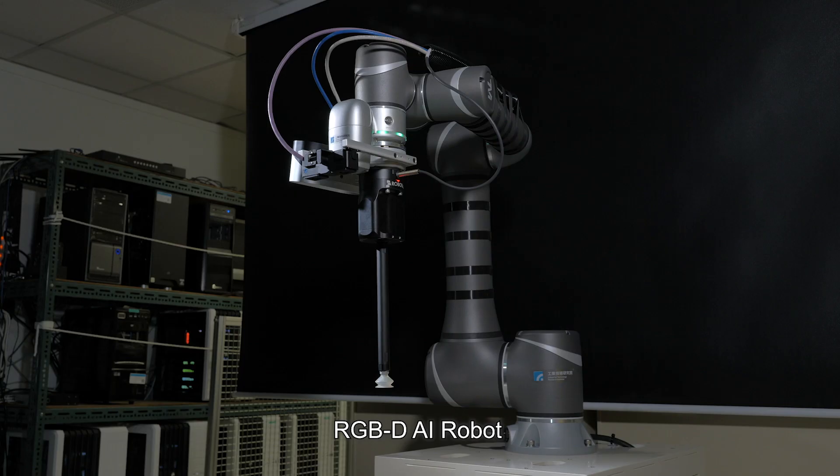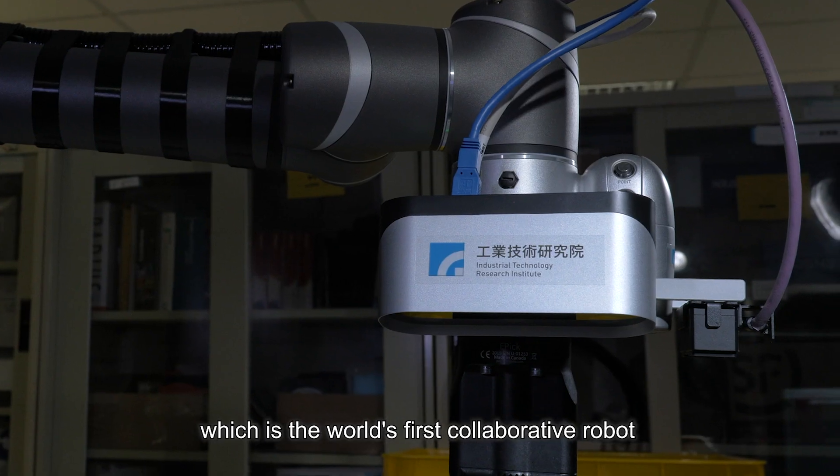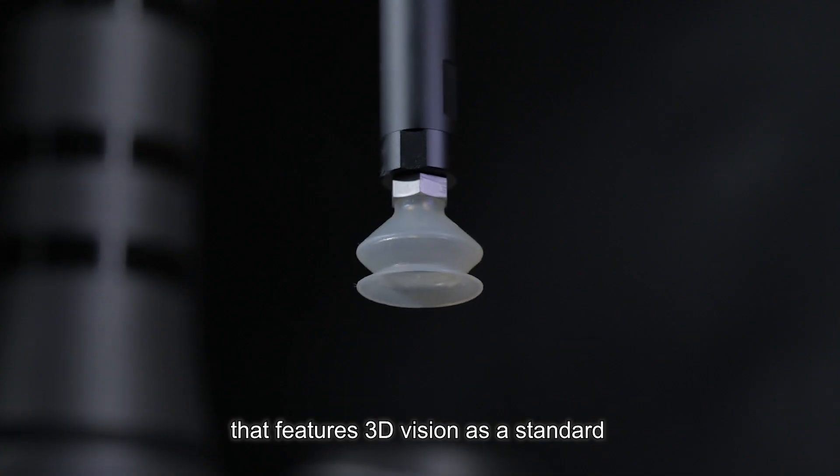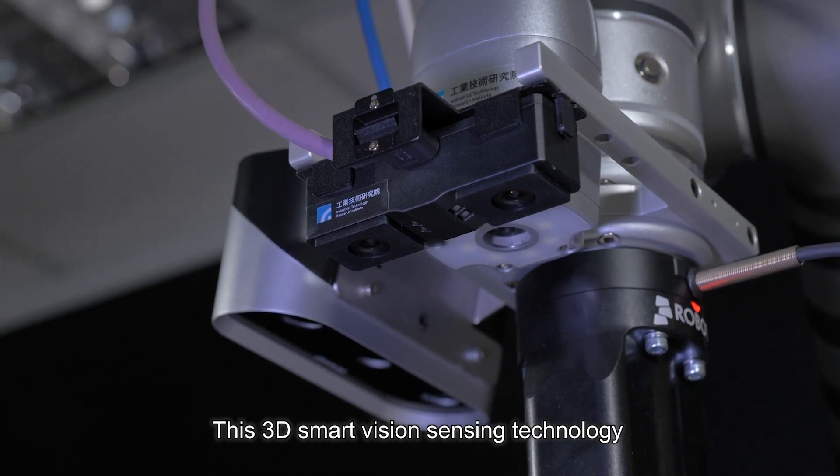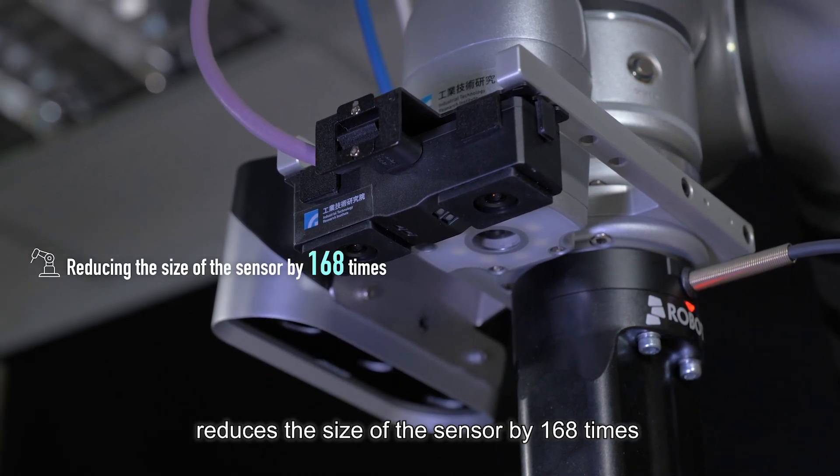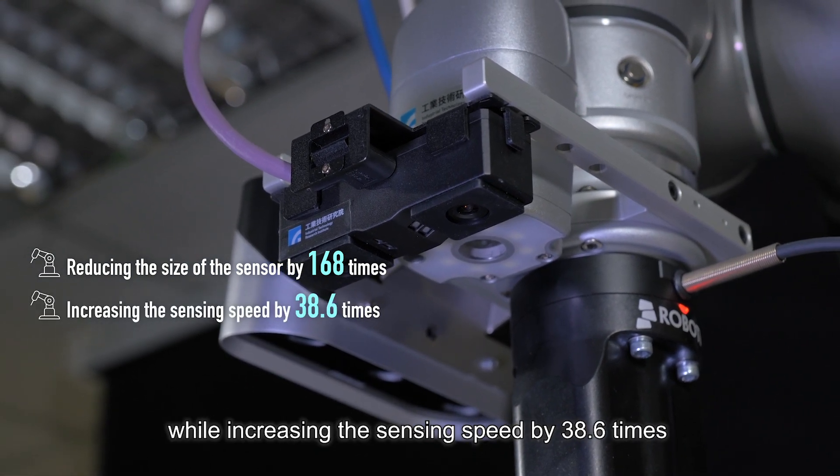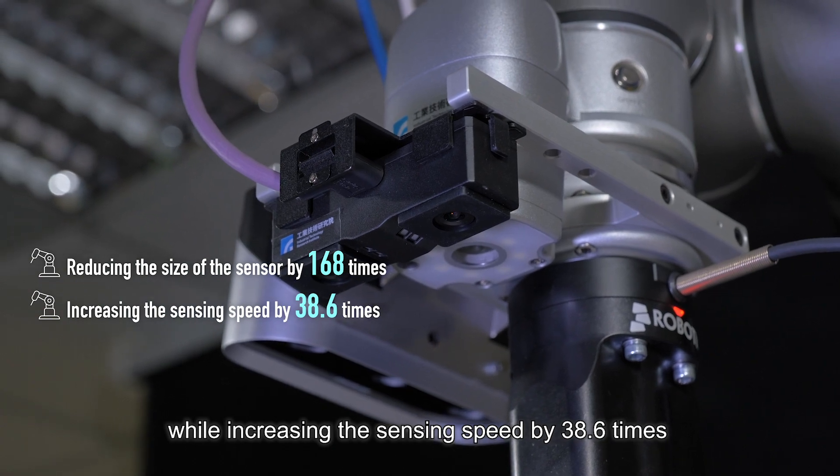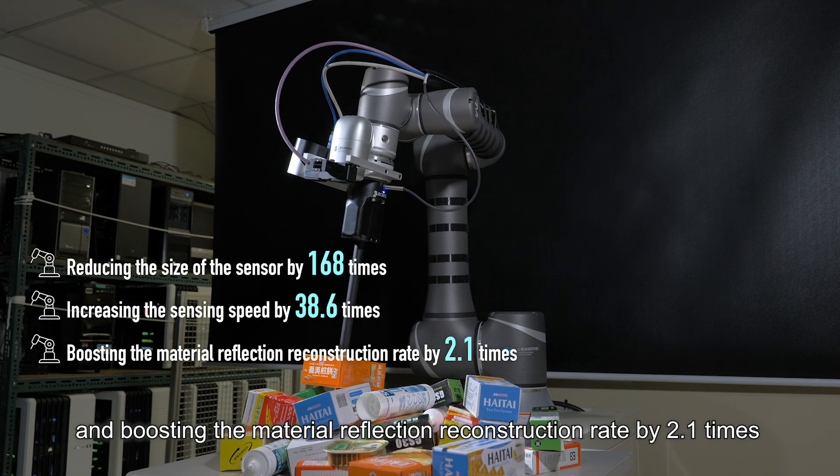Eitri has developed an innovative RGBDAI robot, which is the world's first collaborative robot that features 3D vision as a standard. This 3D smart vision sensing technology reduces the size of the sensor by 168 times compared with other brands, while increasing the sensing speed by 38.6 times and boosting the material reflection reconstruction rate by 2.1 times.